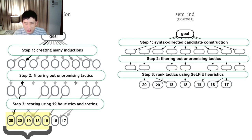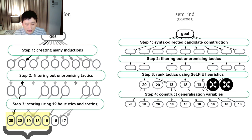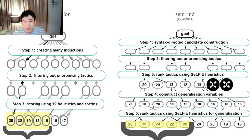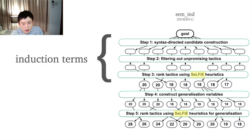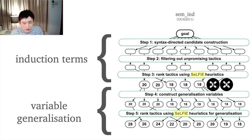I will tell you more about this language in 2 minutes. After giving scores to each candidate, we discard candidates with lower scores. For each remaining candidate, we produce new candidates that involve variable generalization in step 4. Finally, we apply 8 generalization heuristics to the candidates and present the most promising ones to the user. As you probably noticed, SemInd first decides on what terms we should apply induction, then removes less promising candidates, and finally analyzes variable generalization for the remaining candidates, so that it can produce recommendations quickly.